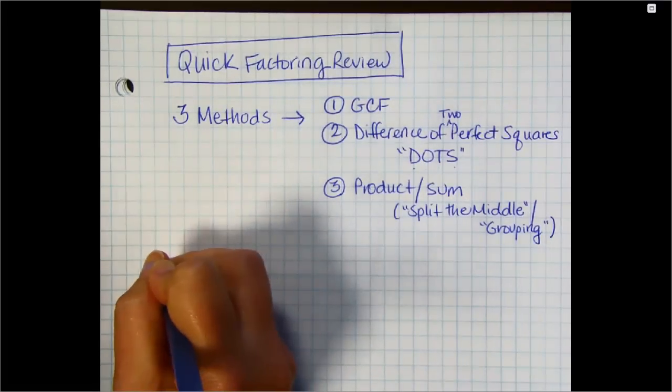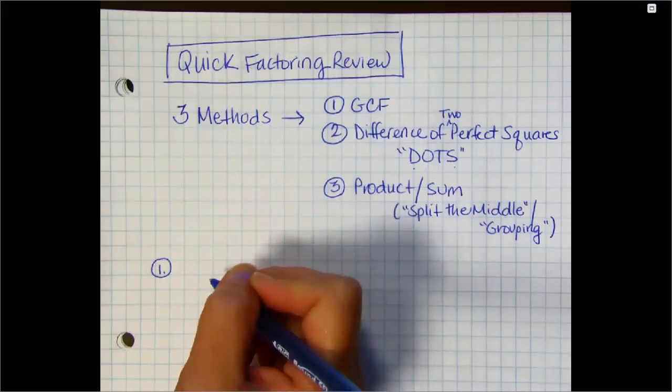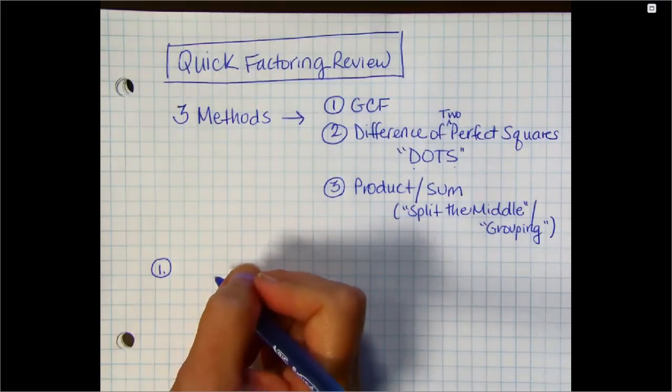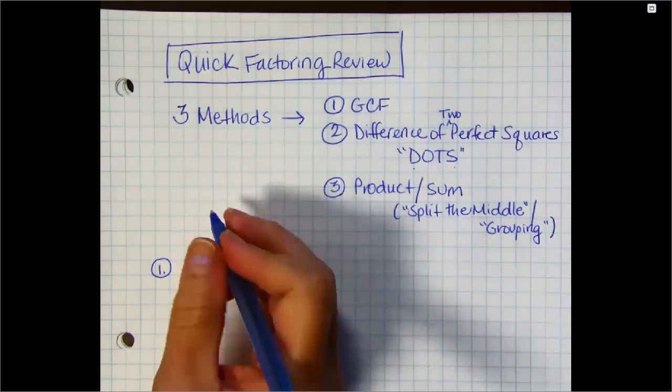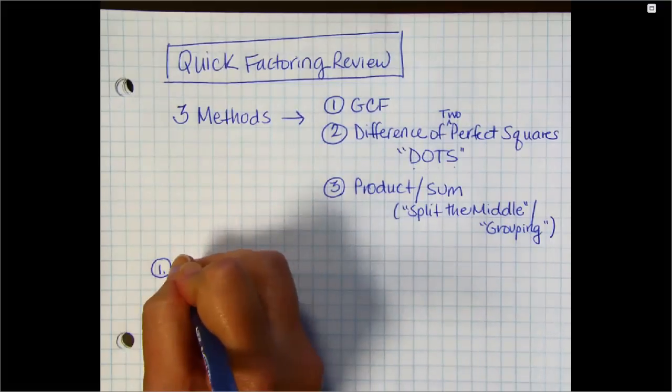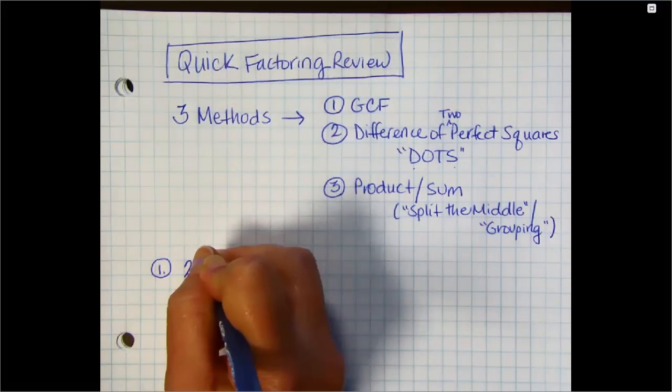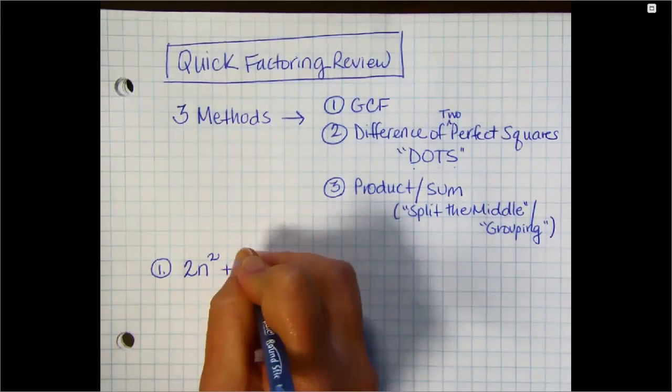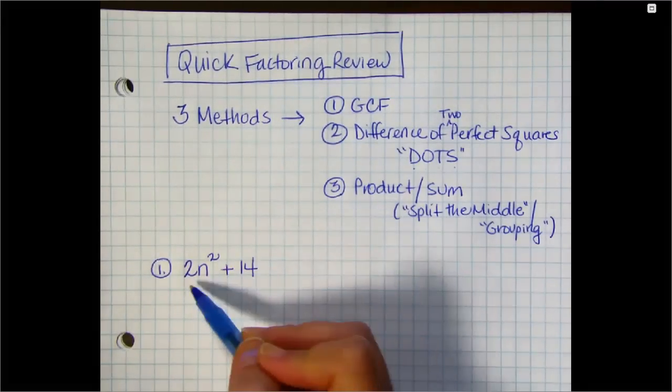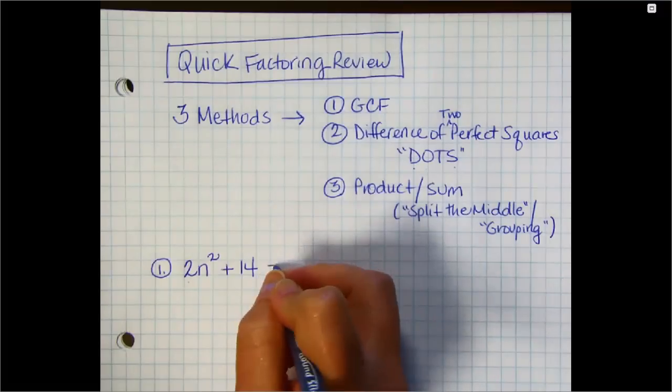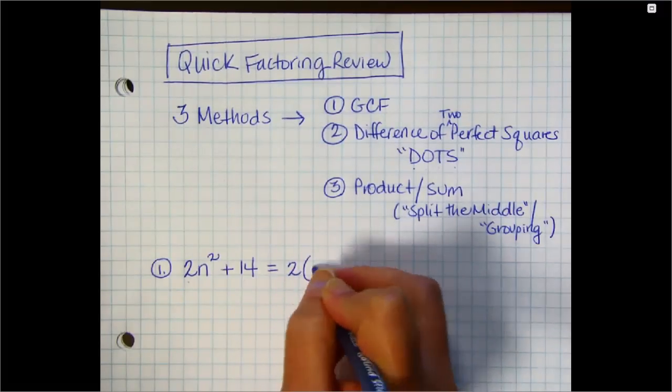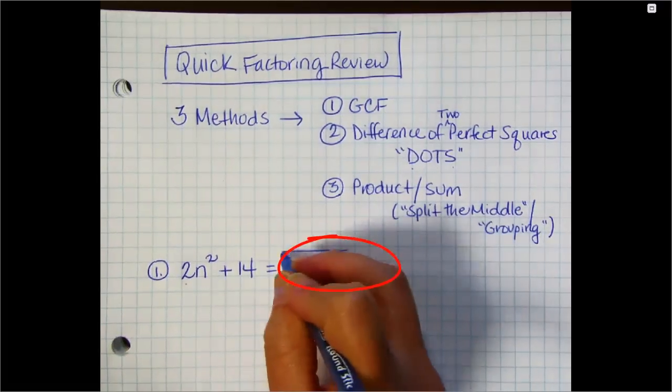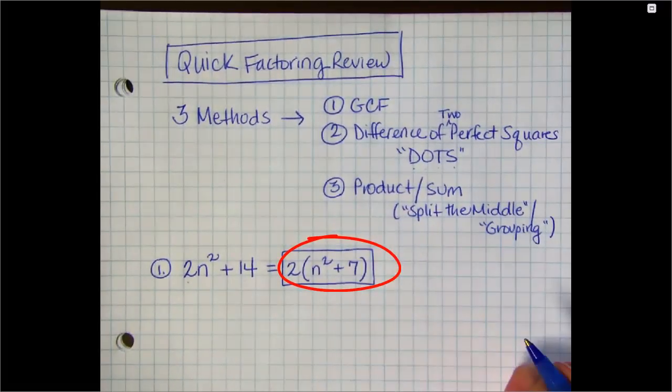So let's run through some examples. The first one, if you're asked to factor something like 2n squared plus 14, the first thing you always look for is something common to pull out. Here, 2 divides into both parts, so we pull that out front and we're left with n squared plus 7. Real basic GCF or greatest common factor.